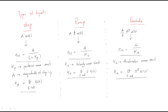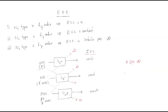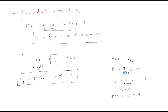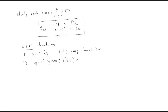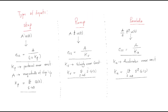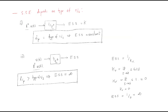For parabola input, use limit s tends to 0 of s squared times G(s) to find ka, and then calculate the steady-state error. This is the complete theory regarding steady-state error. I hope all of you understand this session. Before discussing problems, you should have a clear idea about this theory. Thank you.